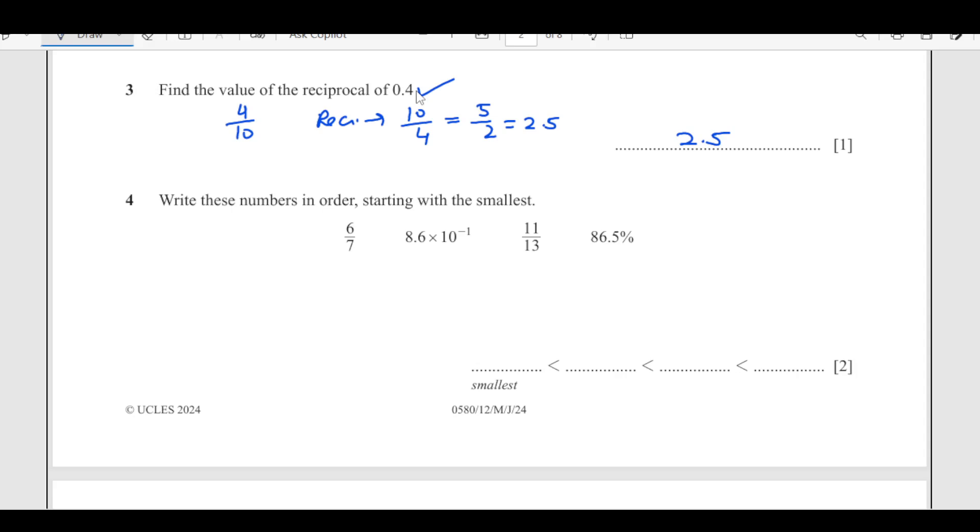Number 4, write these numbers in order starting with the smallest. The easiest way is to make them look the same. This is percentage, this is fraction, this is in standard form and this is also fraction. Divide 6 by 7, this comes out to be 0.8571. If you write this one 10 raised to power minus 1, this is going to be 0.86. 11 divided by 13 gives us 0.366 and this is 0.865.